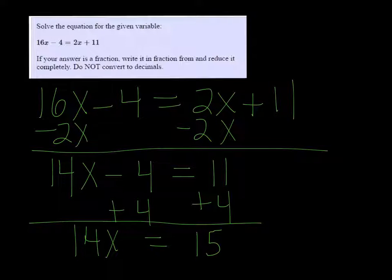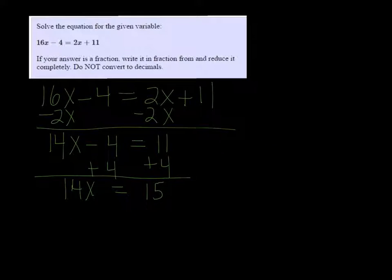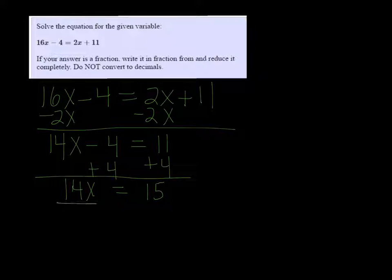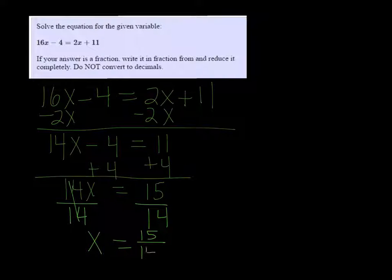And finally, I'm going to divide both sides by 14 to get rid of the 14 in front of the x. And I'm just left with x equals 15 over 14. And it doesn't reduce, so we're good.